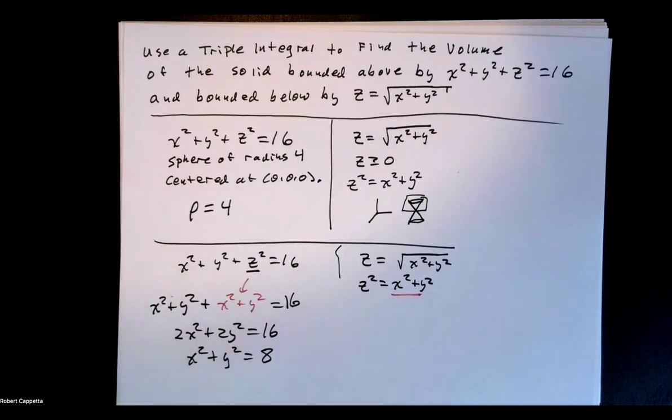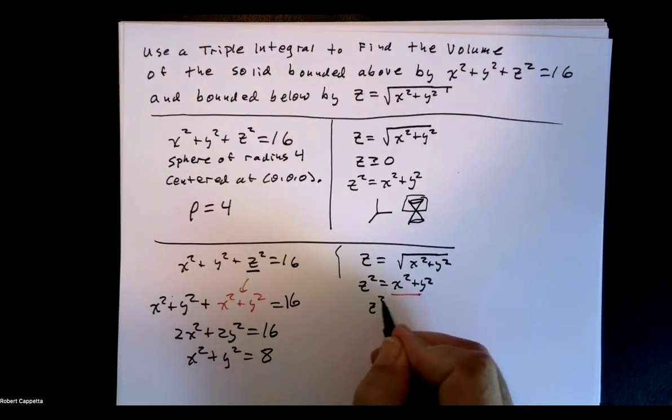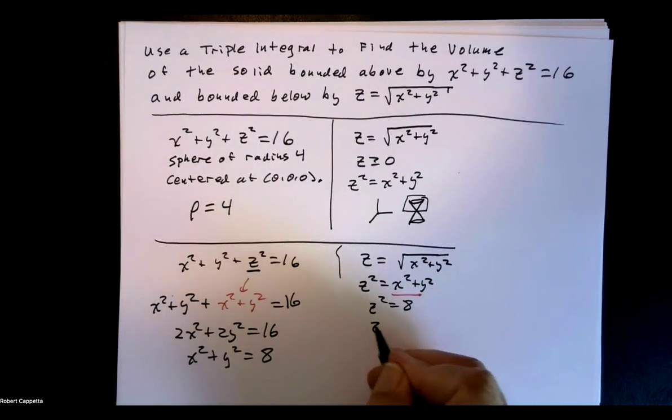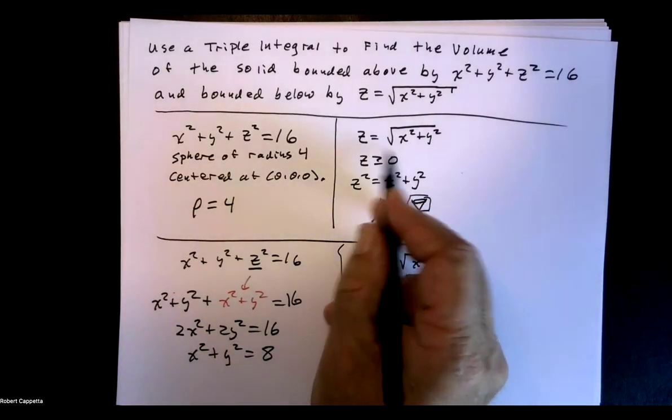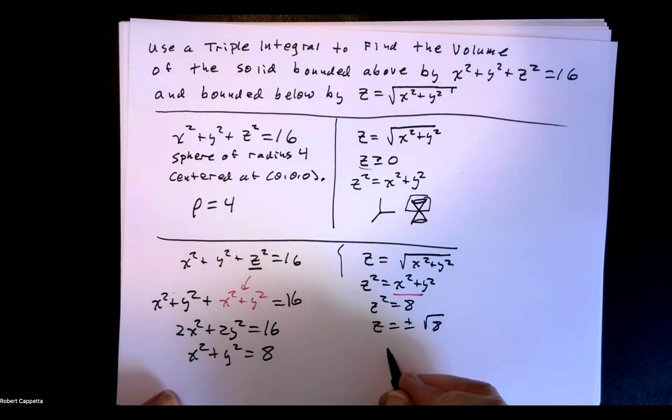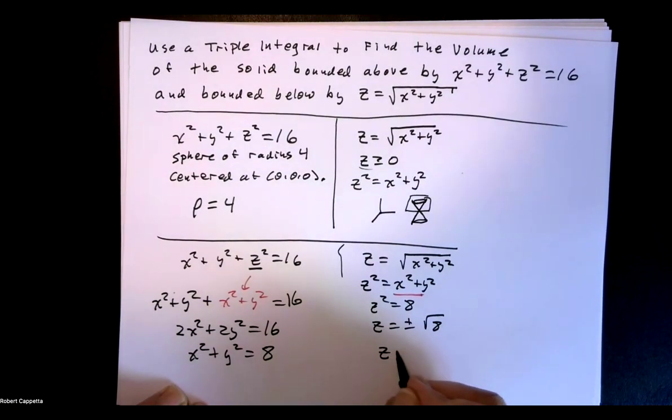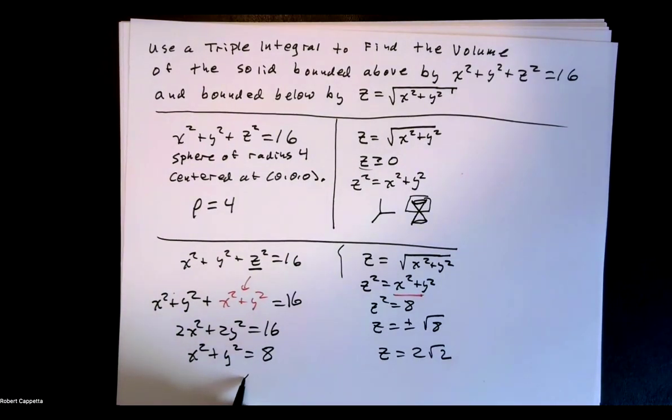So that's the shadow of the intersection in the xy plane, which is what we need. That will define our region of integration. If you're interested to see what the z value is, of course, z squared is 8, so z would be plus or minus root 8. But we're only using the positive values, again, because z is greater than or equal to 0. So z is 2 root 2. So we have a circle of radius the square root of 8 with a height of 2 root 2. That's what the intersection is.